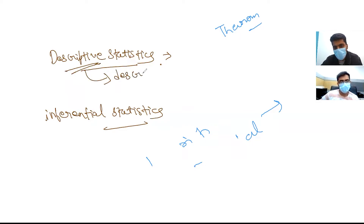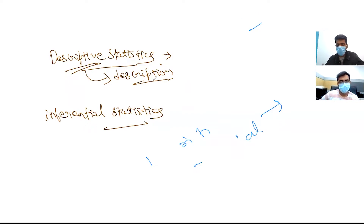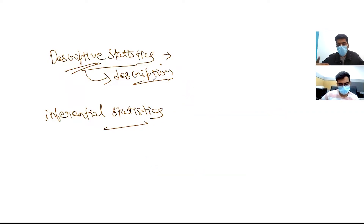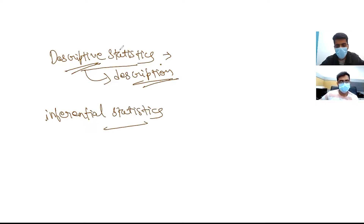Through this description we get all the characteristics and features of our dataset. We also look for measures of distribution, like central tendency and variability, and we do this in order to draw conclusions based on known data. That's it about descriptive statistics.